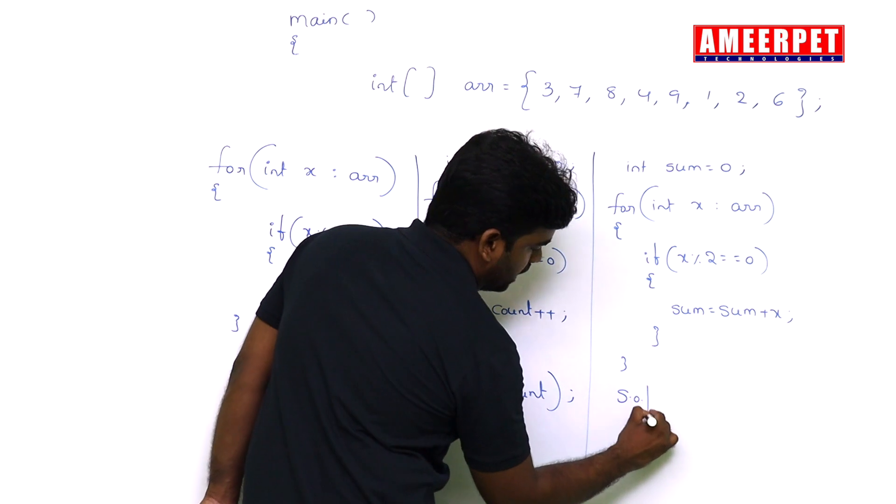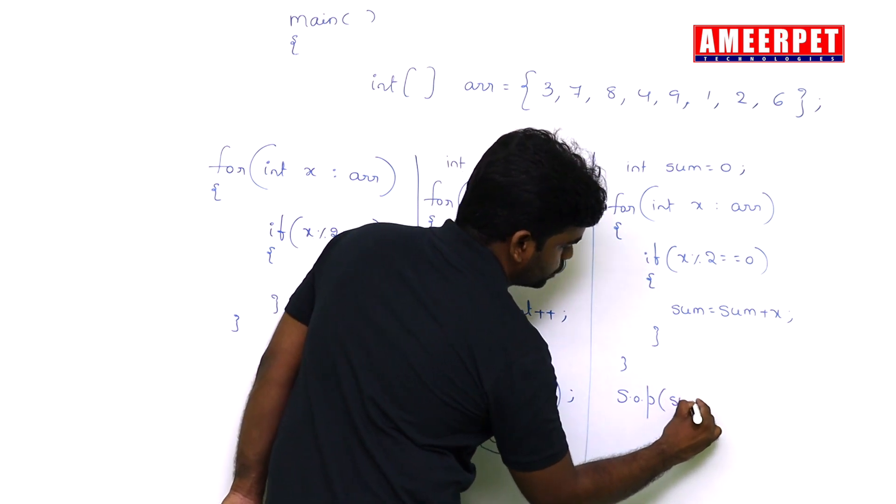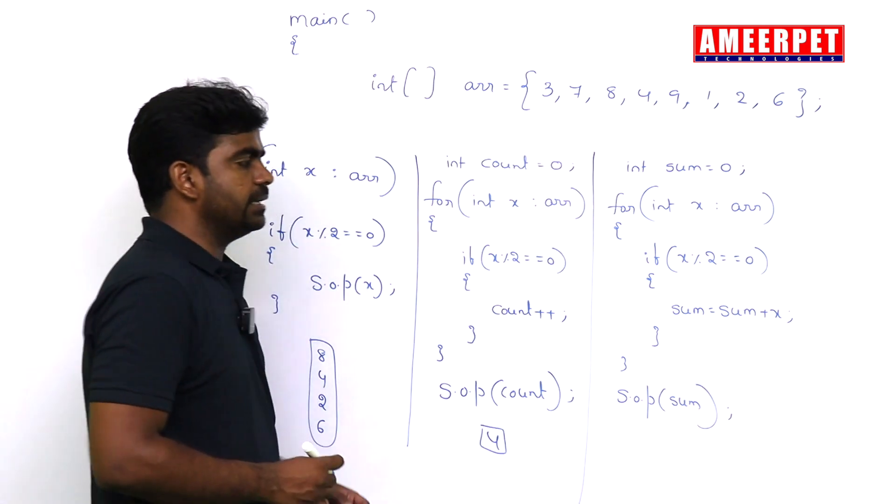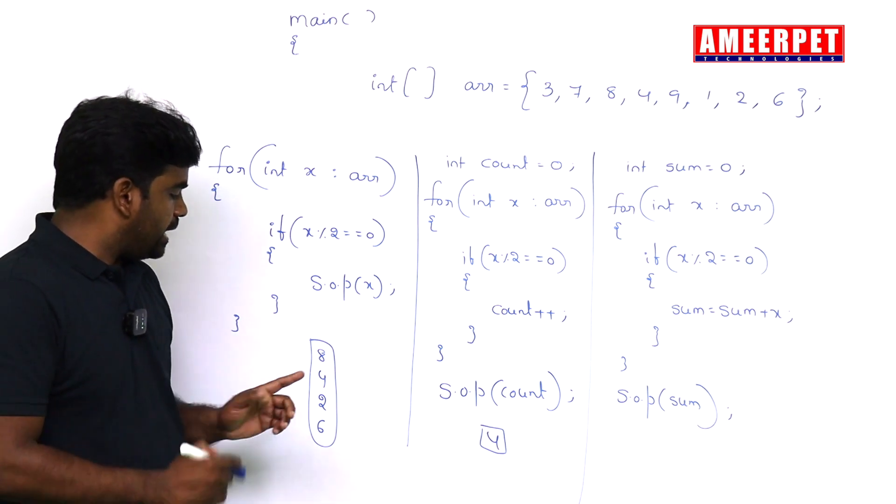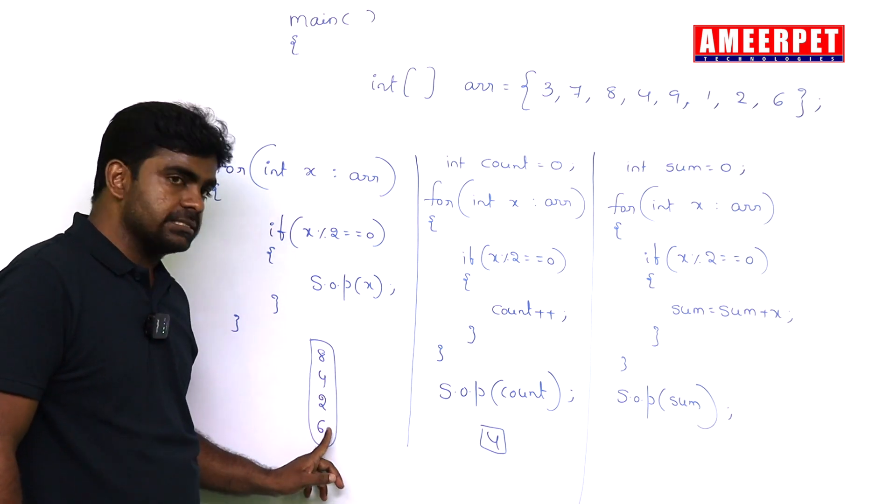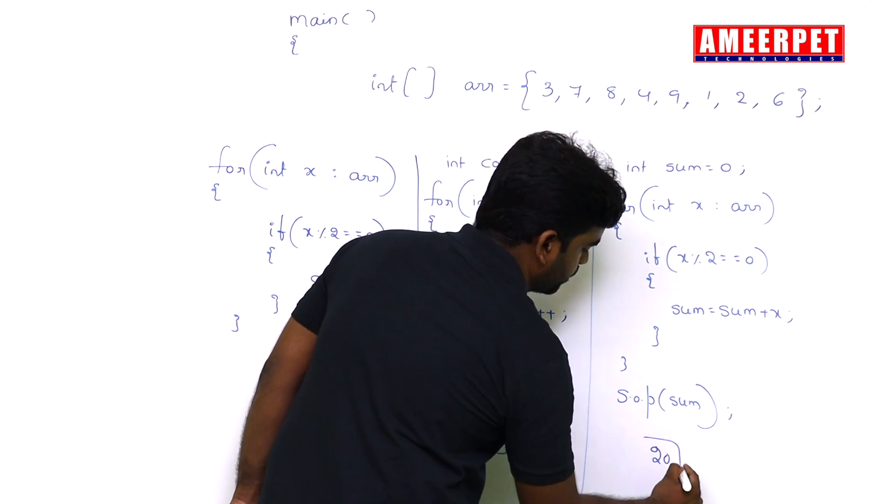Again, printing the sum value only one time, so outside the loop we are printing. It will add 8 plus 4 plus 2 plus 6, which is 20. So output is 20 will come.